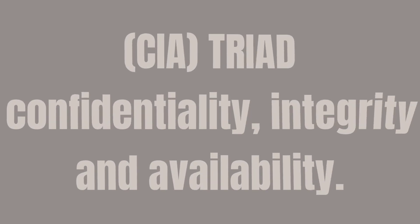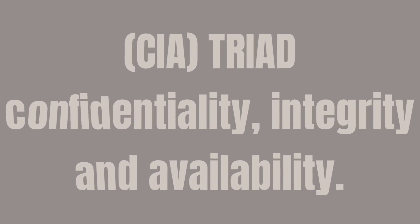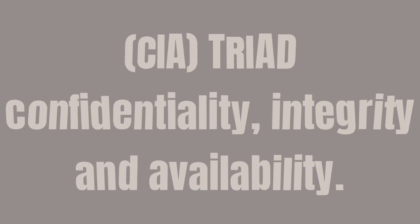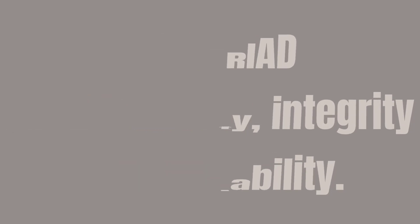Article 32 of the GDPR sets out the technical and organizational measures that organizations should implement to protect the personal data that they're storing. The CIA triad refers to the information security model made up of three main components: confidentiality, integrity, and availability.